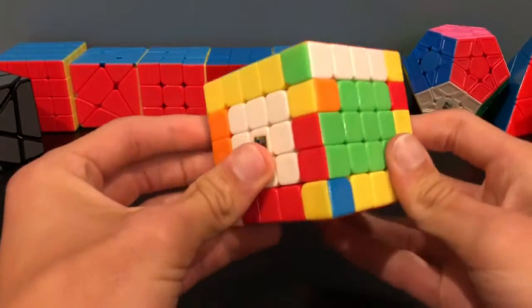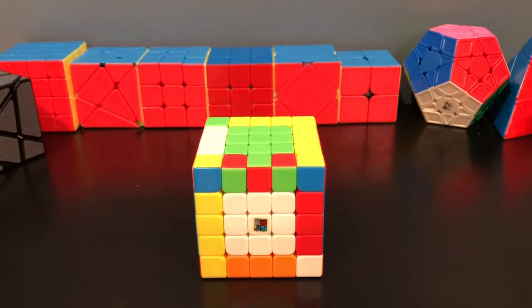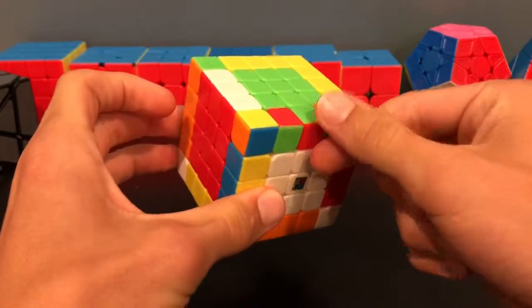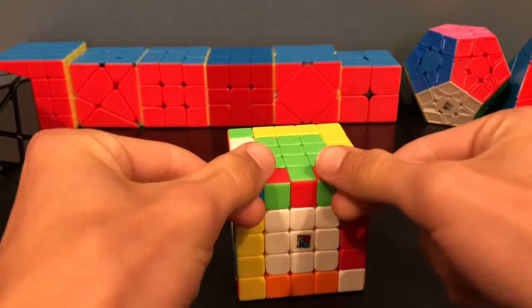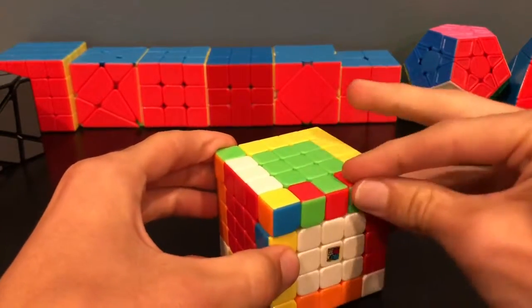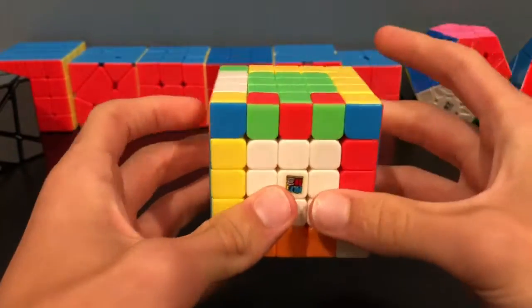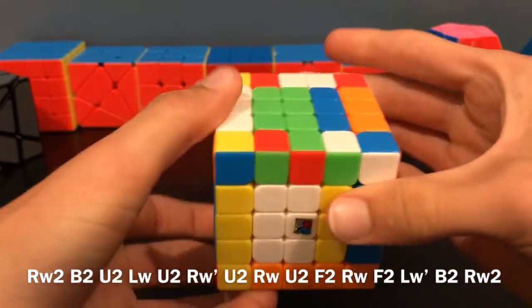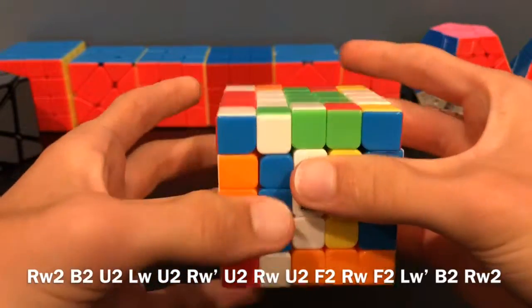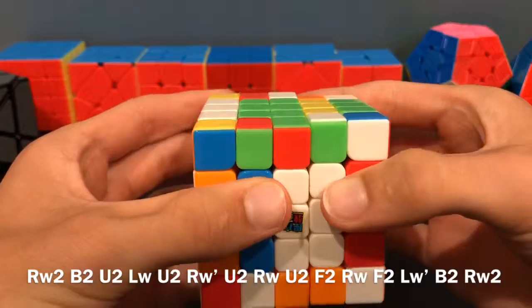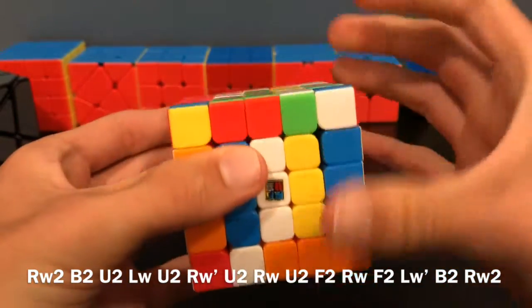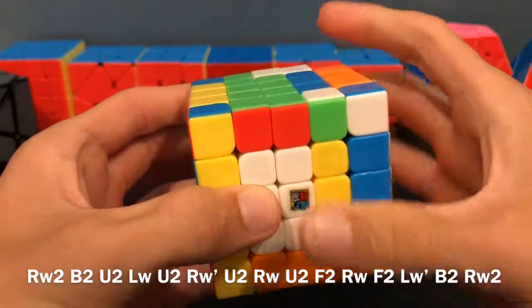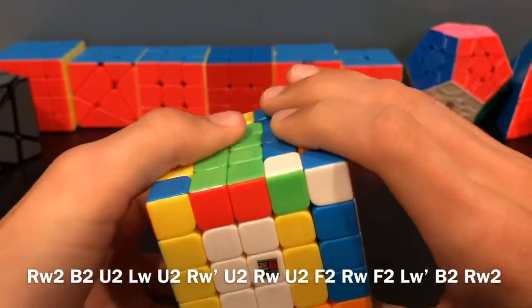There is one more algorithm I'm going to show you. Here is a case when you only have one edge left. So all the rest of the edges are paired, and now it seems like this needs to be flipped. Now really what this algorithm is going to do is it's going to flip these other two. So then we'll just have a solid green and red edge. So with holding it right here, you'll do this algorithm. R-wide 2, B2, U2, L-wide, U2, R-wide prime, U2, R-wide, U2, F2, R-wide, F2, L-wide prime, B2, R-wide 2.